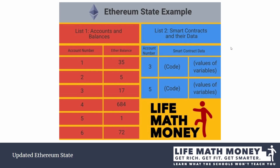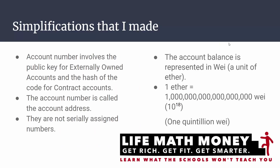I'll point out a couple of simplifications I made. The first is that I said the account number is one, two, three, four, five, six. The reality is that the account number is not a serial list — it is the address of the account, which is derived from its public key.